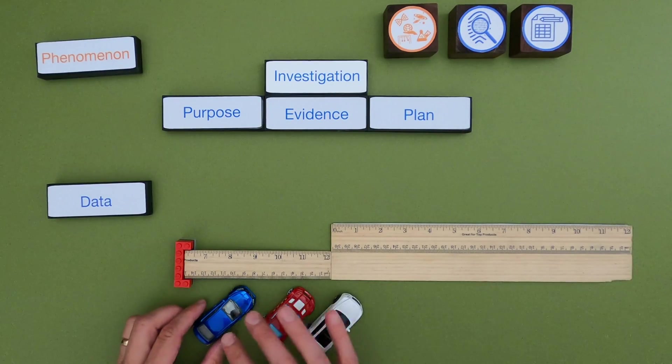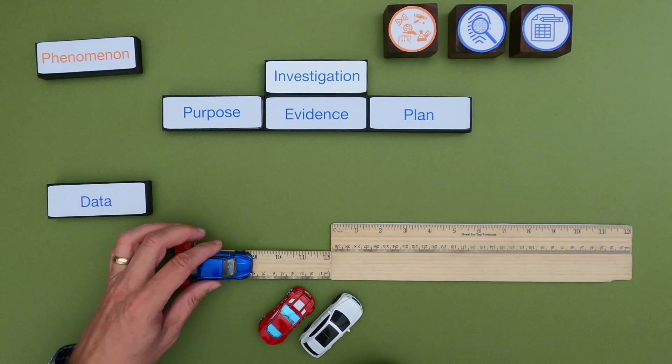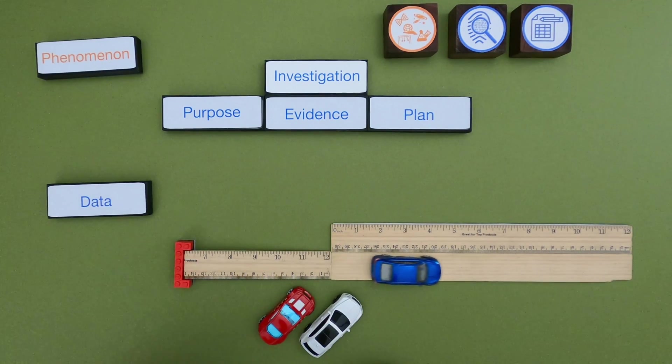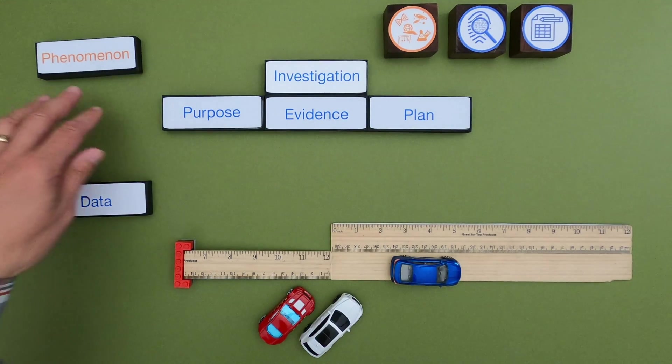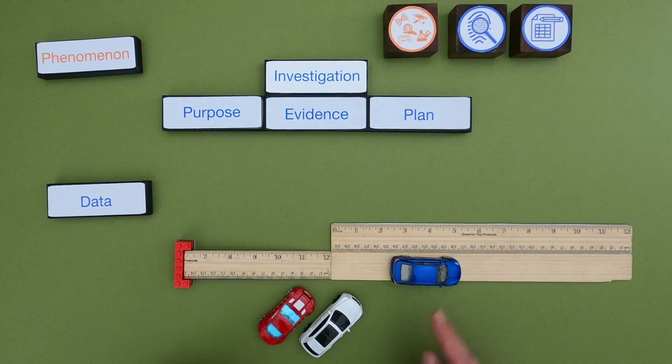Okay for the next one I've got these three cars. I've got a blue, a red, and a white car. I've built this little ramp out of a Lego and a couple of rulers. And so what I would encourage you to do is identify the phenomena, purpose, evidence, plan, and data table. What would you do if you had access to these three cars and a ramp?